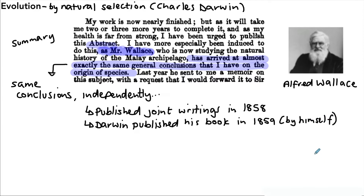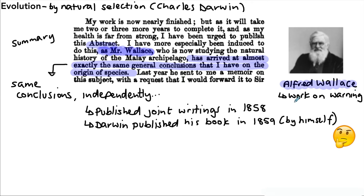Very interesting — he did not include Alfred Wallace in that book. However, Alfred Wallace did do some very important work on warning colours in animals and how they use colours to warn off predators. He also developed a theory about speciation — the idea of how species change from one to another, or how new species develop.